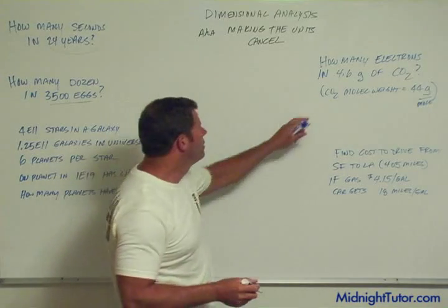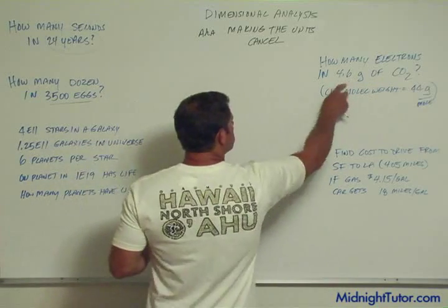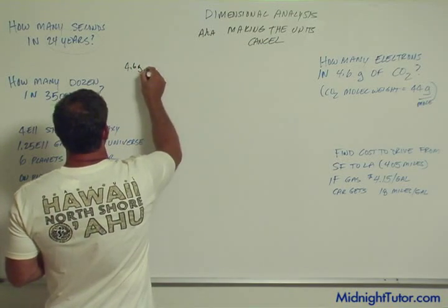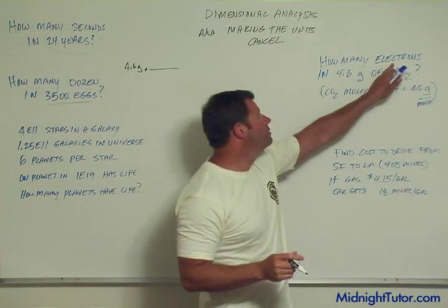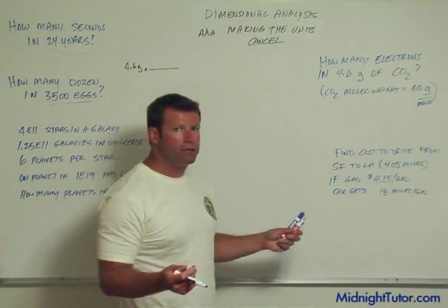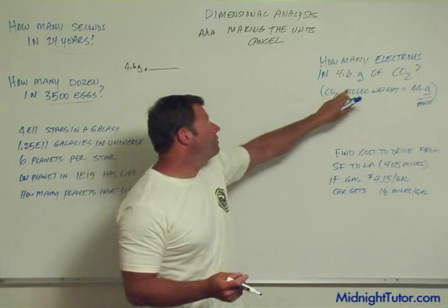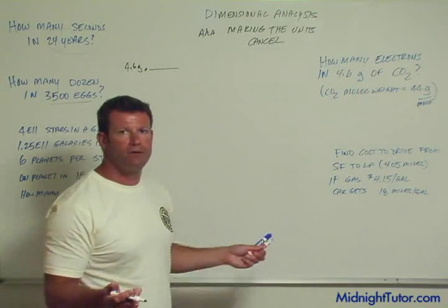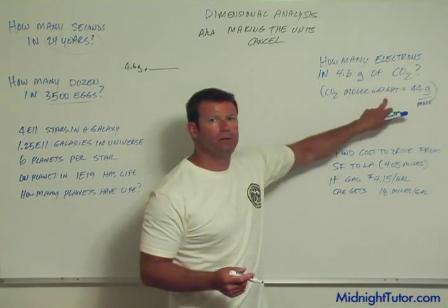Let's do the classic chemistry problem: how many electrons in 4.6 grams of carbon dioxide? We have a known starting point of 4.6 grams, and we need to convert that. Electrons are a property of how many atoms there are — how many molecules — and each molecule has one carbon and two oxygen atoms. The way we count molecules is using Avogadro's number, which you need to know.